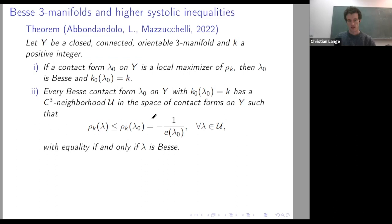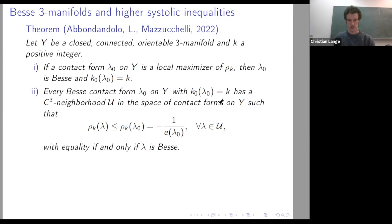We also prove a converse: every Besse contact form on Y satisfying the condition that K equals K₀ (as determined by the multiplicities) has a C³ neighborhood such that each contact form in this neighborhood satisfies the inequality on the K-th systolic ratio, with equality if and only if the contact form is Besse. Corollaries include local systolic inequalities on Besse orbifolds seen before, and for Finsler two-spheres — the Finsler metrics on S² all of whose geodesics are closed also give rise to Besse contact forms.